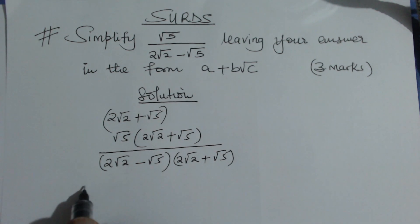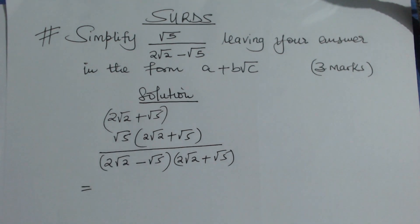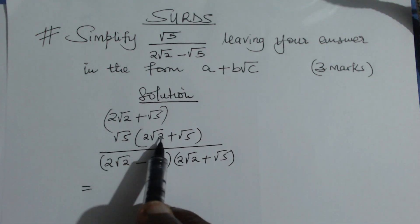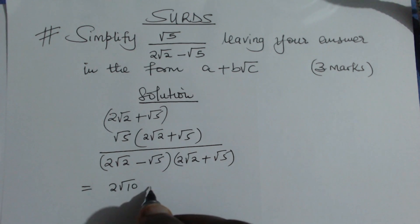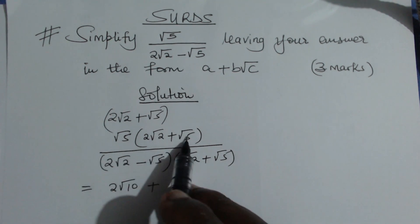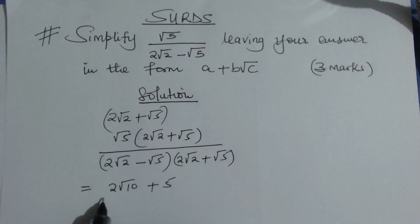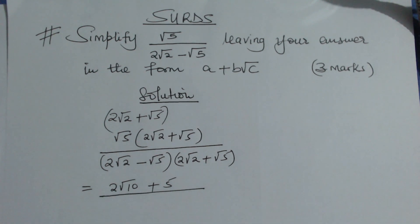When you go to the numerator, this is what you're going to have: √5 times 2√2 will give 2√10, then plus √5 times √5 will give 5, everything divided by...